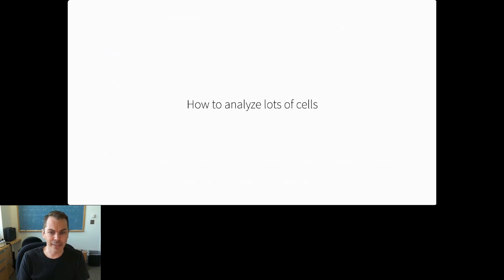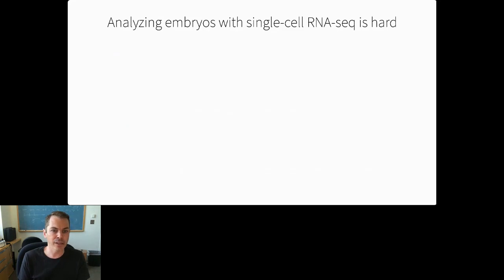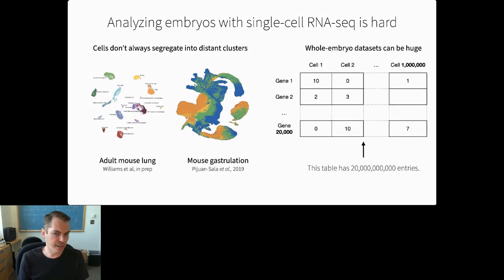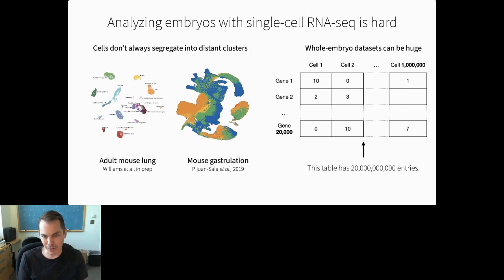Analyzing whole-embryo single-cell RNA-seq is hard for two main reasons. First, unlike adult tissue, cells from embryos don't always segregate into distinct clusters corresponding to cell types; they're asynchronously differentiating, giving more continuous smears or trajectories rather than clusters. Second, the datasets get huge—when we sequenced the mouse embryo, we were working with a matrix of 20,000 rows and a million columns, basically a table with 20 billion entries, which requires specialized data structures to handle the sparsity.